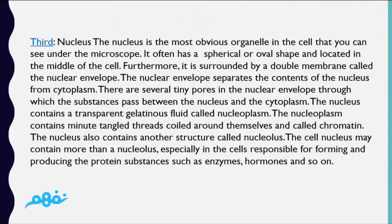The nucleus is the most obvious organelle in the cell that you can see under the microscope. It often has a spherical or oval shape and is located in the middle of the cell. Furthermore, it is surrounded by a double membrane called the nuclear envelope, which separates the contents of the nucleus from the cytoplasm.